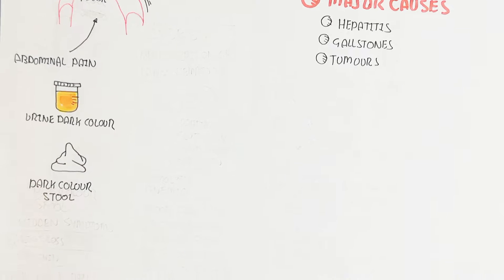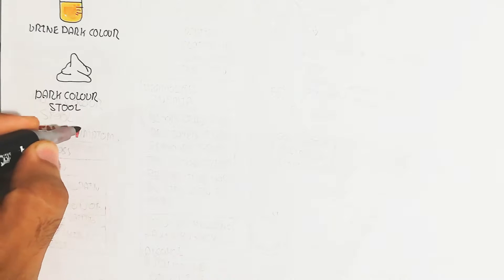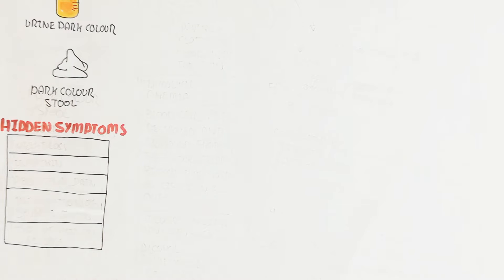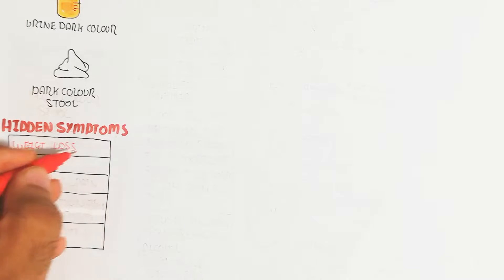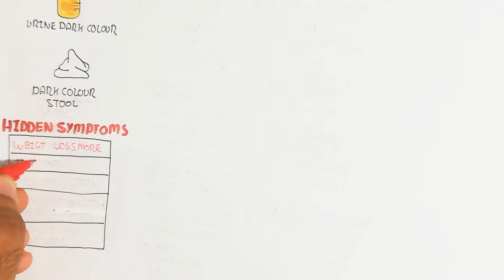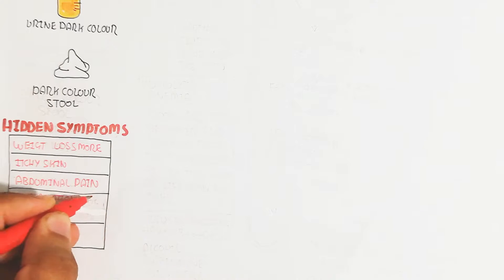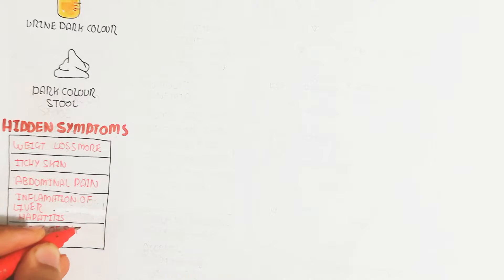The dark color of stool indicates that bilirubin has increased in the digestive system and upon excretion is being reabsorbed. Hidden symptoms can include weight loss, itchy skin, abdominal pain, inflammation of the liver as in hepatitis, and types of skin disease, which are also major causes.